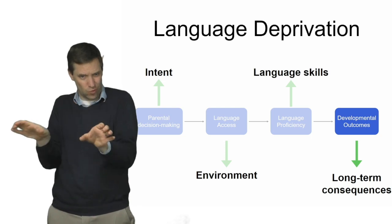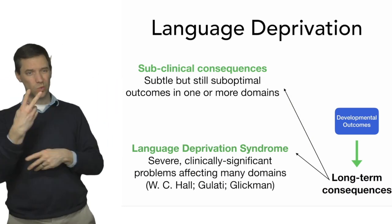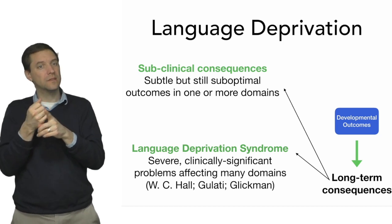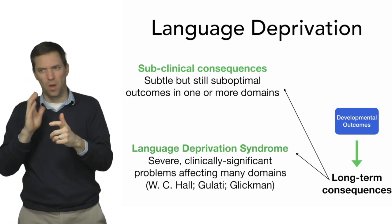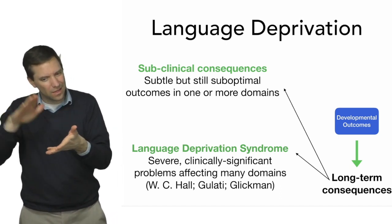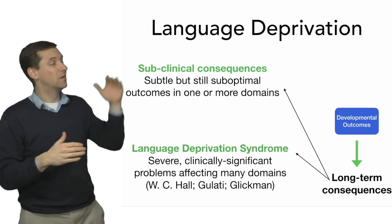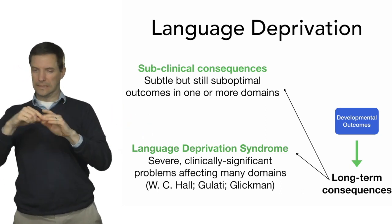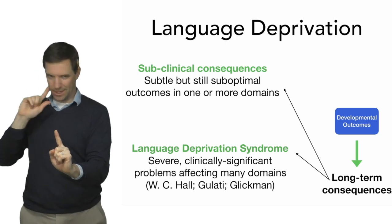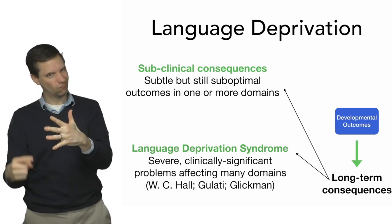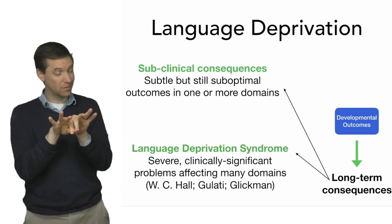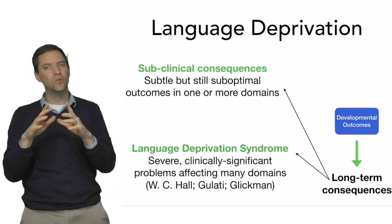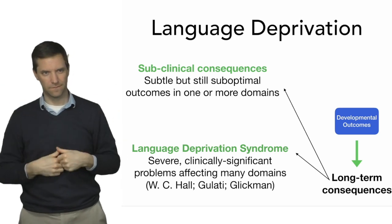This fourth point has a further sub-distinction, as you can see here. We can think about two kinds of long-term impacts. One is what we might call subclinical consequences — less obvious things you wouldn't necessarily see at first glance, but still reflecting ways that a child is performing below their full potential. On the other hand, there is language deprivation syndrome, which is a much more severe condition, more easily detectable, where people have difficulty in many domains. Both are important, but not every deaf or hard of hearing child will have clinically significant language deprivation, or even the milder form. The concern is that too many children will.